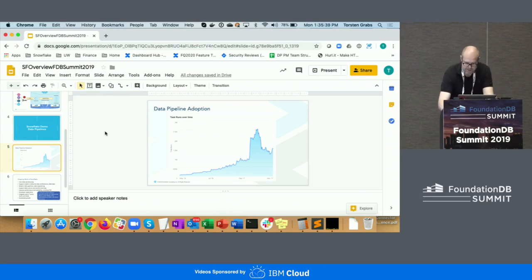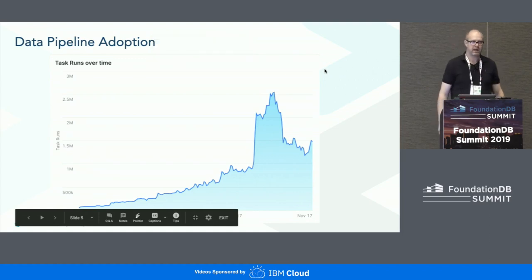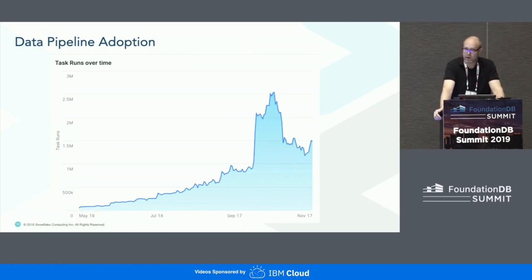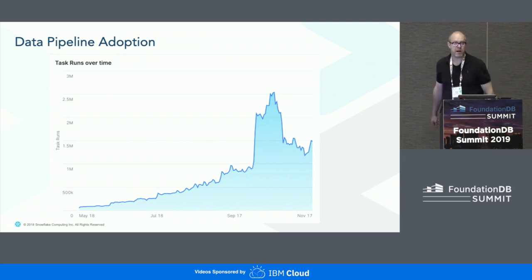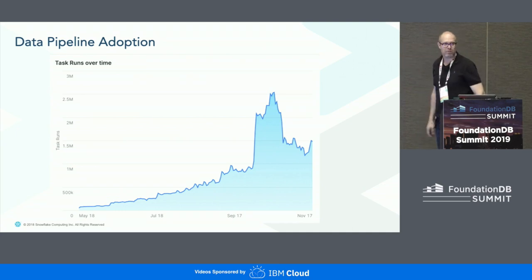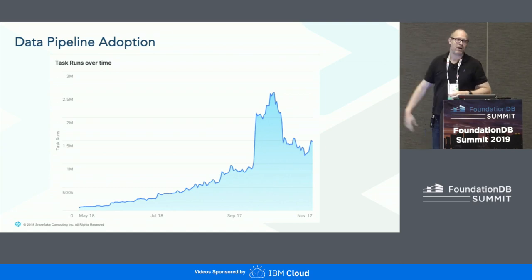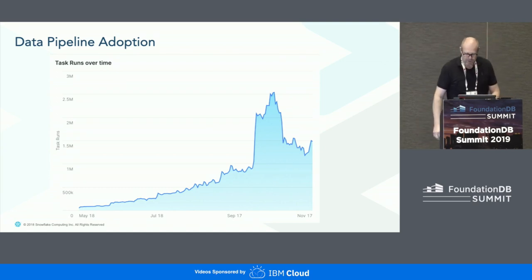Let's look at some adoption data while we wait. Here you can see the number of task executions on a daily basis plotted over a timeline — we are now well above one and a half million task executions every day. Each of those task executions triggers on the order of 10 to a few dozen FDB transactions, so there is a substantial additional load. One customer went super crazy creating tasks — we found that out, talked to them, and found an easier way to implement their use case, which is why you see us coming back to that regular hockey stick trajectory.